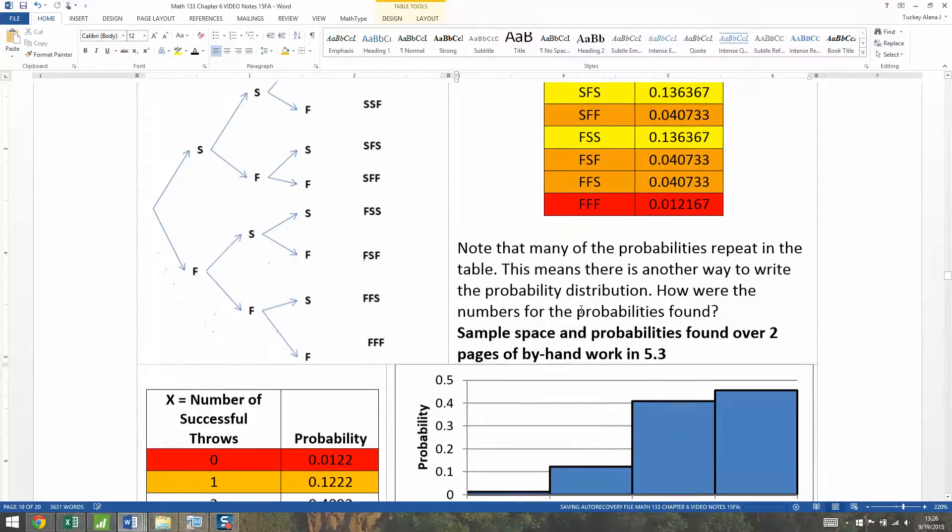And that's no good for us. I mean, it's fine in chapter five, but the problem is that's not a very efficient way to be doing problems like this. We want a more efficient way to be able to figure out the probabilities in the sample space quickly. Sample space and probabilities were found over two pages of by-hand work in section 5.3 - not efficient. We want another way that will be more efficient, something that will work quickly and easily.